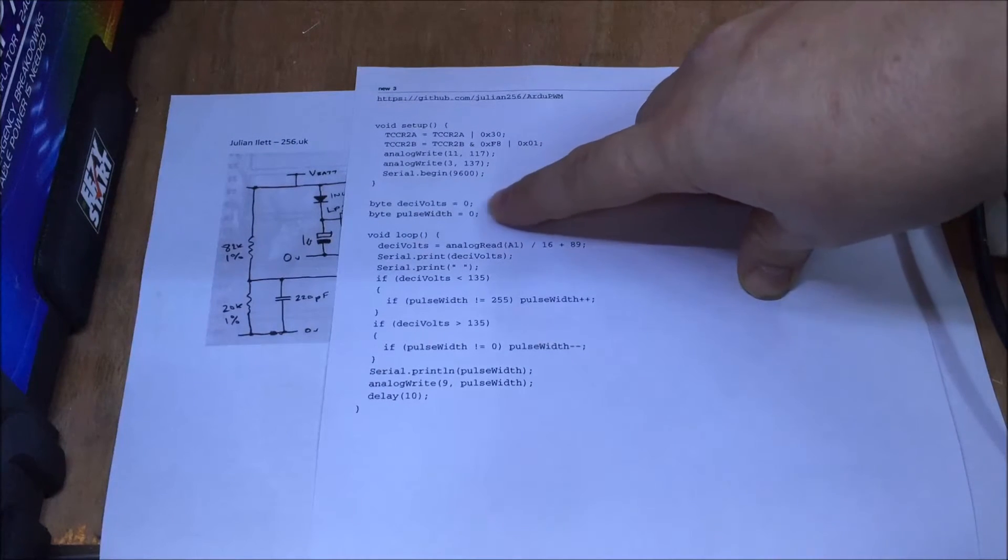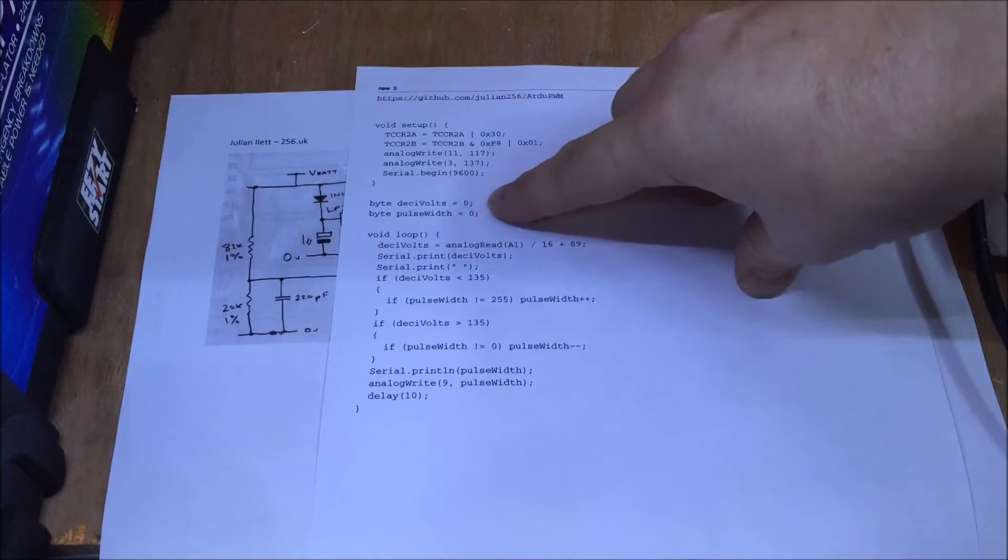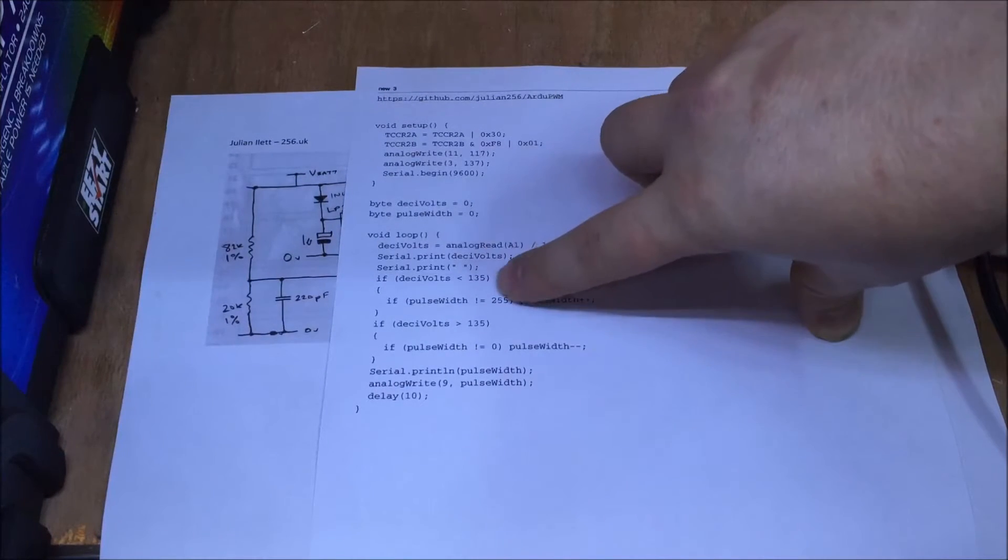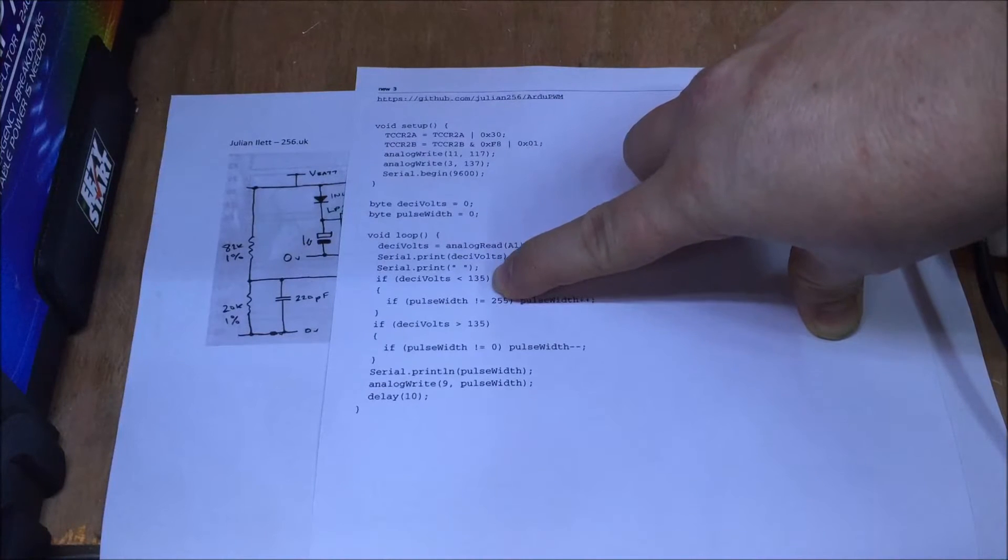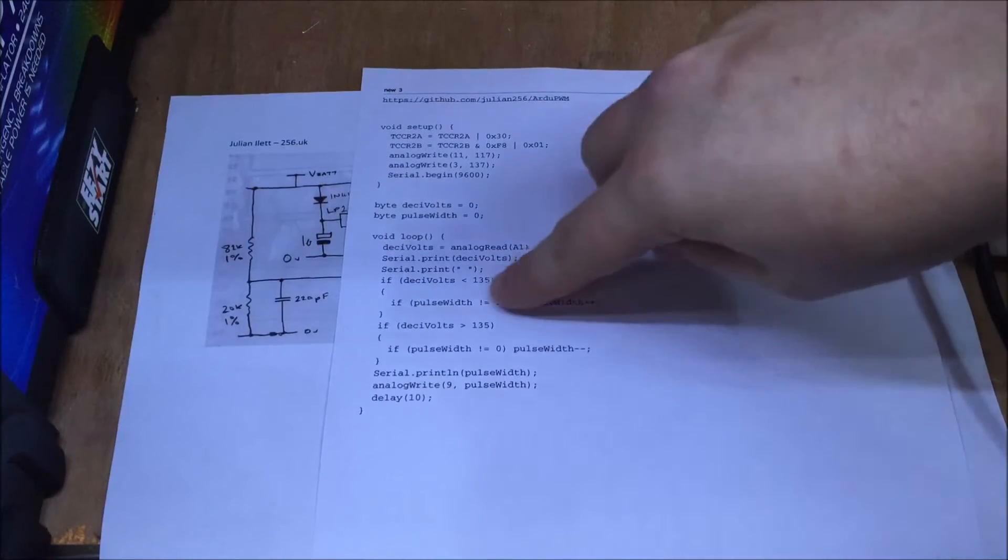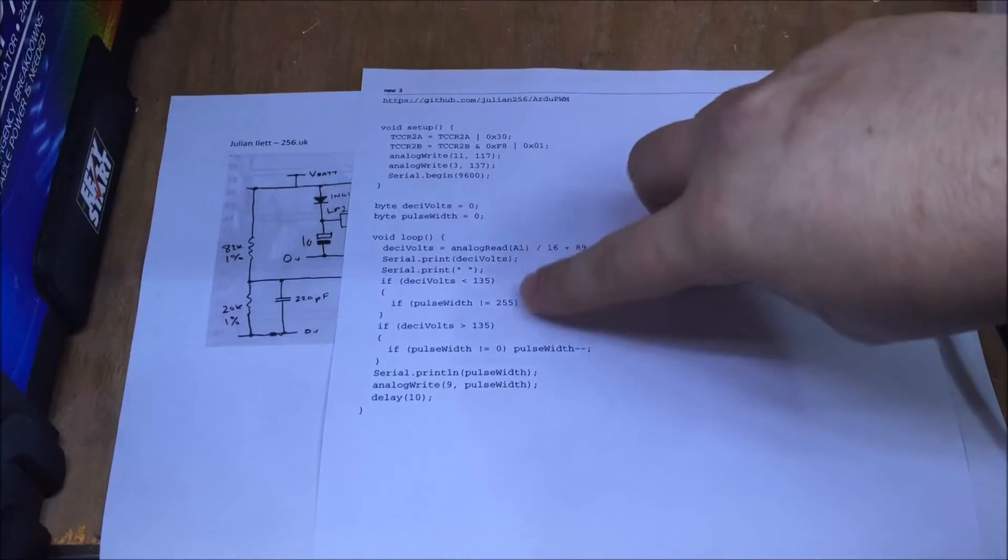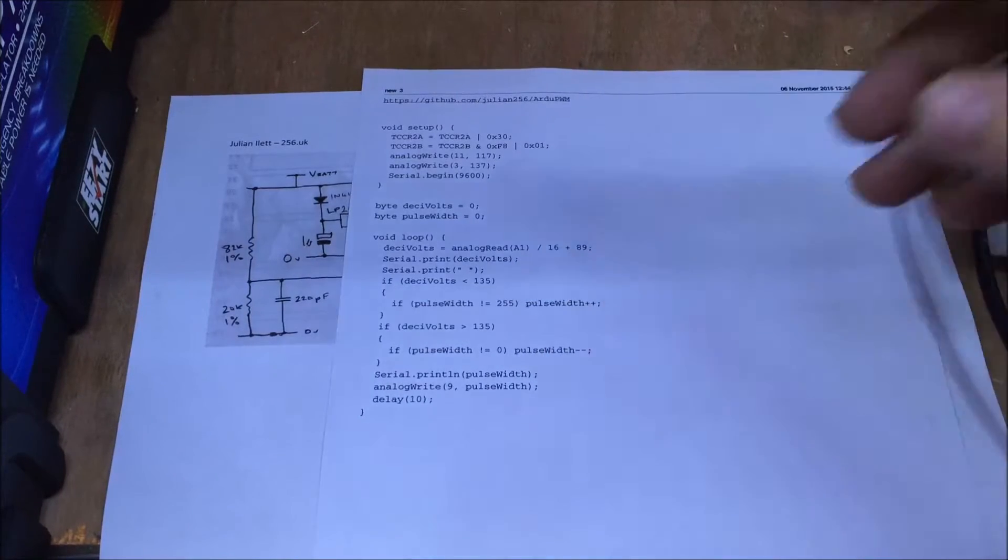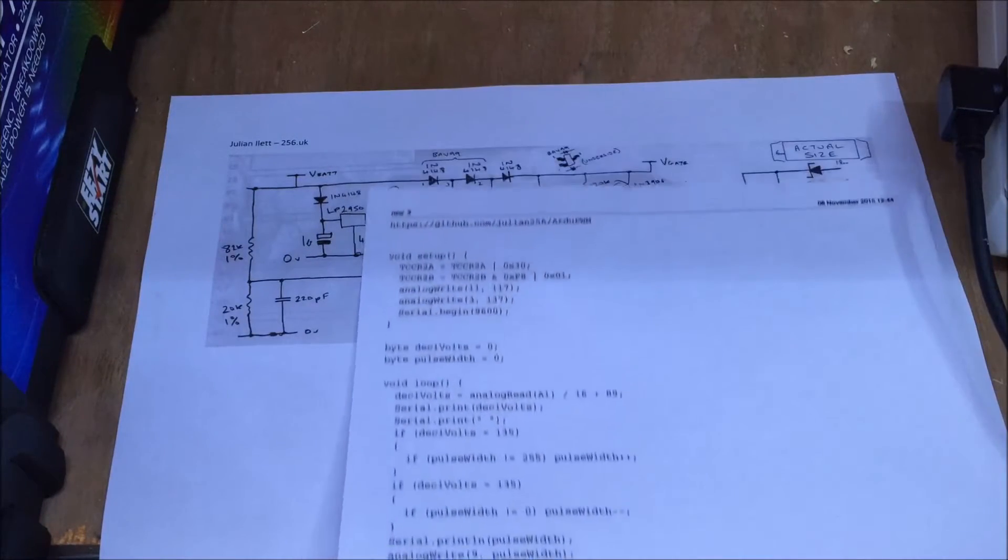He uses a variable of decivolt, which is a tenth of a volt, which makes some of the math a bit easier, I think, later on. So all it does is read analog pin 1, use some math, convert into decivolts. If it's below 13.5 volts or 135 decivolts, you change the pulse width to go up, and if it's below, you change the pulse width to go down. So that was his really simple code, which was available on GitHub.